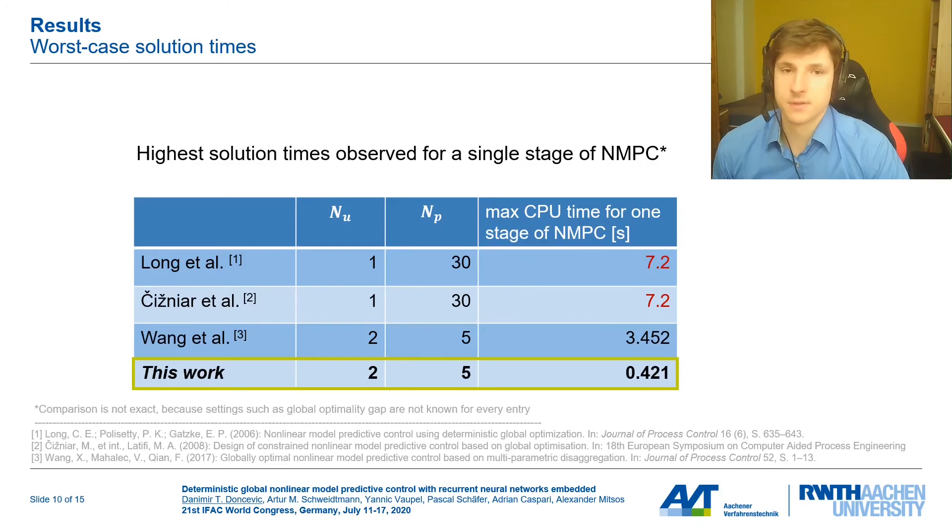Now we take a closer look at the solution times for global NMPC. What we see in this table is, in this right column, the highest recorded solution time for one stage of NMPC during a closed-loop experiment. This is to examine whether the real-time threshold is met or not. I want to point out that these comparisons here with other researchers are difficult because not everyone has used the same parameterization for NMPC. They are further not conclusive because we also don't know what other people have used as settings in the global optimization algorithm, in particular in terms of the optimality gap upon termination of the algorithm. What we can conclude, however, is that our approach has no issues with the real-time threshold. As you can see, for each stage of NMPC, the result was computed in less than 0.5 seconds.